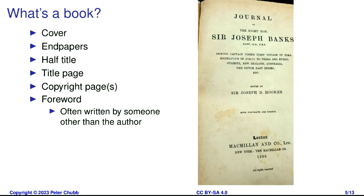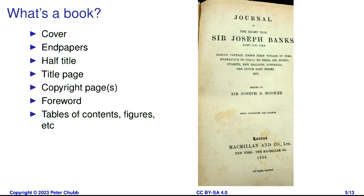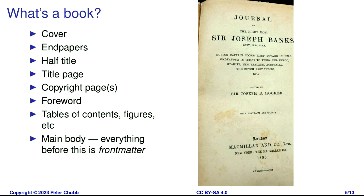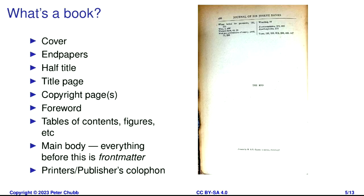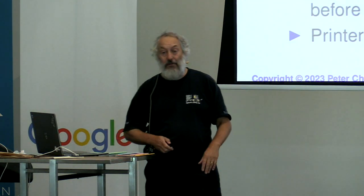You then come to the foreword or the prolegomenon or the introduction, which is often written by somebody other than the author. They have their own copyright in that, which needs to be acknowledged somewhere. Then you've got all the tables of contents, figures, and so forth, and then you finally get to the real book. All of the stuff before has been numbered with Roman numerals. Now you come to the bit numbered with Arabic numerals, which goes to the end of the book and contains what the author wrote. Right at the end is the publisher's colophon, which contains information about the printer.